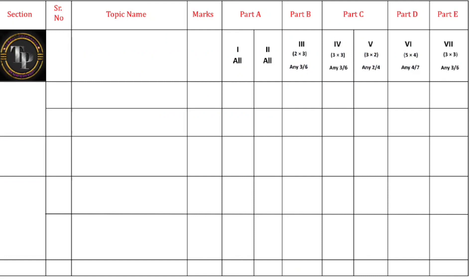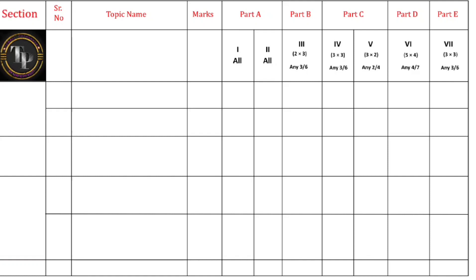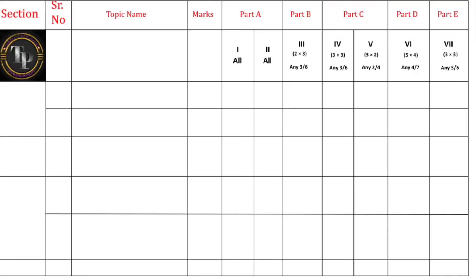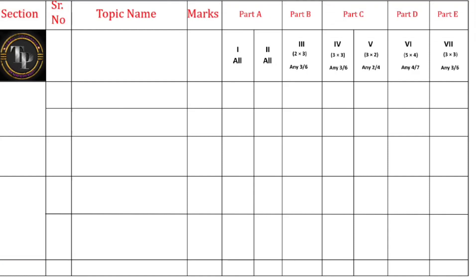Without wasting time, let us start. You all have seen the model question paper already signed by the PU board. This year the question paper pattern is somewhat different — you will get section-wise questions. In Part A, there are two parts: Roman number 1 and Roman number 2. Roman number 1 belongs to MCQs and Roman number 2 belongs to fill in the blanks. In Roman number 1, there are 15 MCQs — you have to solve all 15. In Roman number 2, there are five fill in the blanks — you have to solve all five.